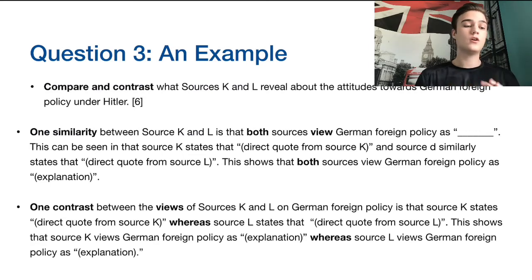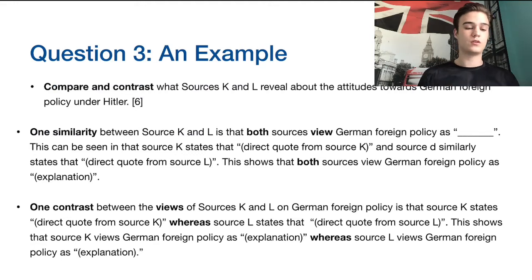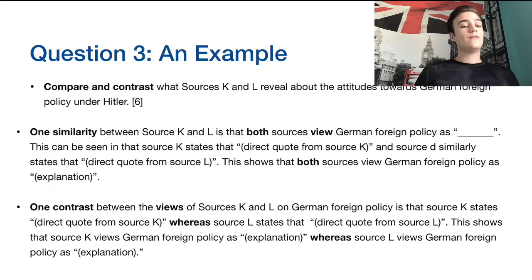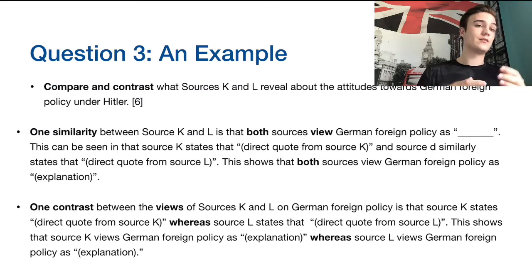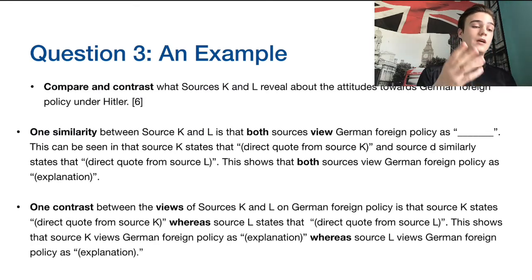For contrasts, use different keywords. Say: 'One contrast between the views of sources K and L on German foreign policy is that source K states...' — provide a quotation as evidence — 'whereas source L states...' — and say something different. Then: 'This shows that source K views German foreign policy as...' and 'whereas source L views it as...' The key words for contrast are: contrast, views, and whereas. Those are the words which distinguish two sources from one another. Find three similarities and three contrasts and answer them in triplets.